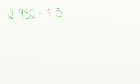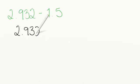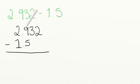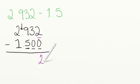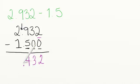Let's run through a practice problem together: 2 and 932 thousandths minus 1 and 5 tenths. I'm going to start by setting up my problem with the larger number on top. Now notice, one number is a lot longer than the other, but I still line up my decimal values. Since 1 and 5 tenths ends in the tenths place, I can fill in zeros for the remaining place values. Let's solve: starting in the thousandths place, 2 minus 0 equals 2; 3 minus 0 equals 3; 9 minus 5 equals 4. Bring down the decimal, and 2 minus 1 equals 1.